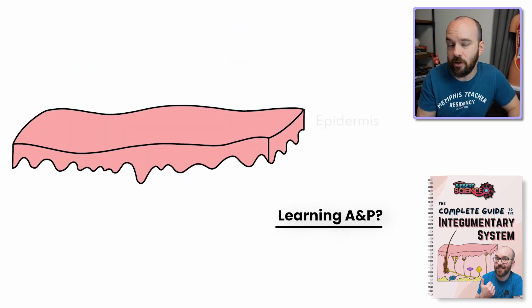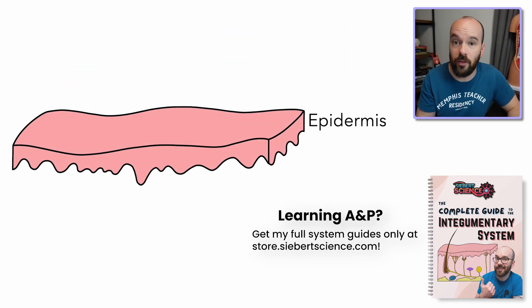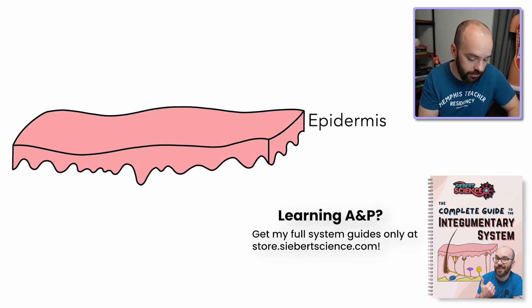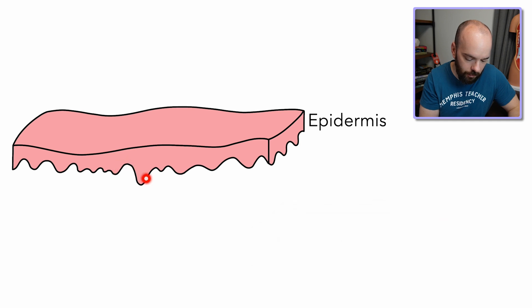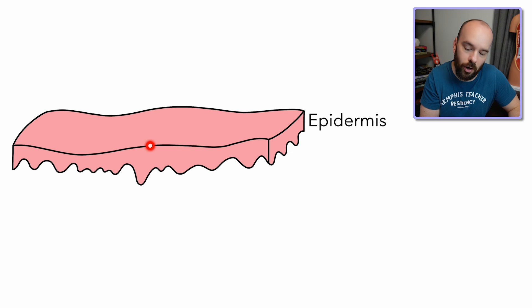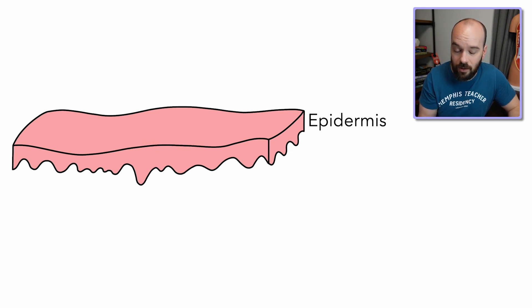Let's start with the three layers of the skin. The outermost, most superficial layer is called the epidermis, which is epithelial cells. At the bottom, there are living cells that are undergoing mitosis. As they move toward the outer part, they die off and become keratinized and waterproof. So that's the epidermis.